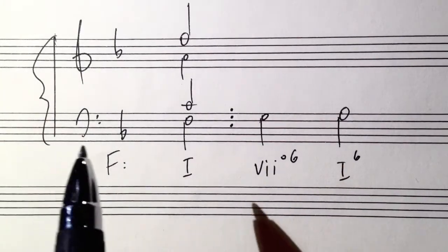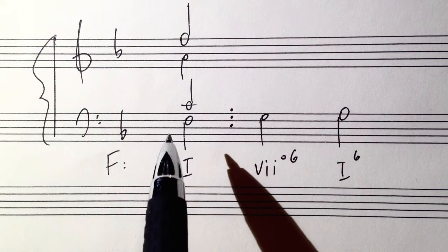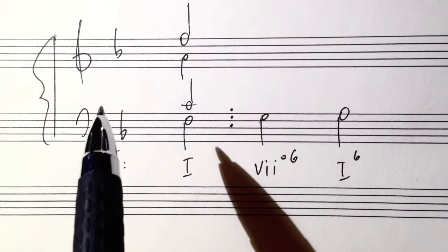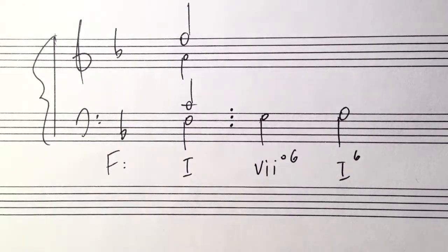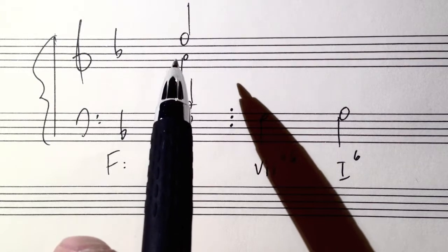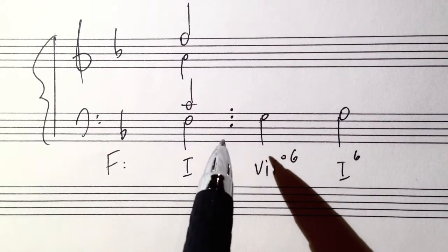So if we look at this example, we're in the key of F major. Here's your F tonic chord - F, the F is doubled up on top again. The best tone to double in a triad is the root. Here's the fifth of the chord and here's the third scale degree.